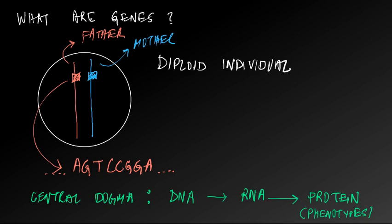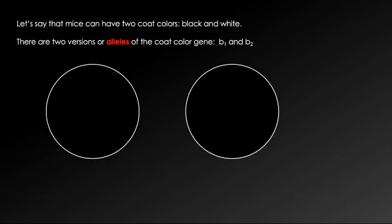Next, let's discuss what alleles are. Let's say that mice can have two coat colors — black and white — and so these are their phenotypes. There are two versions or alleles of the coat color gene: B1 and B2.